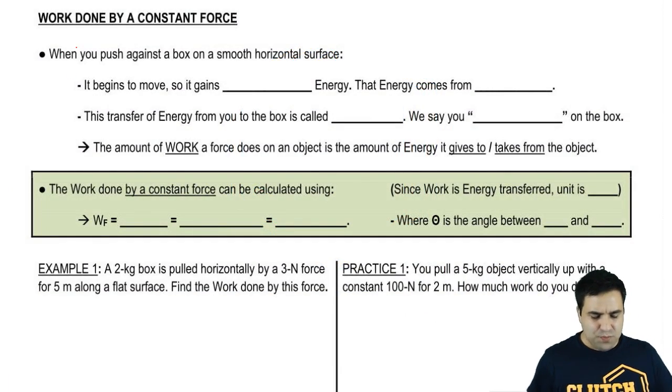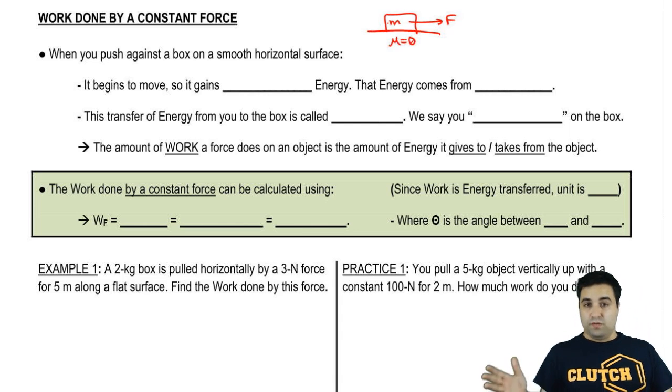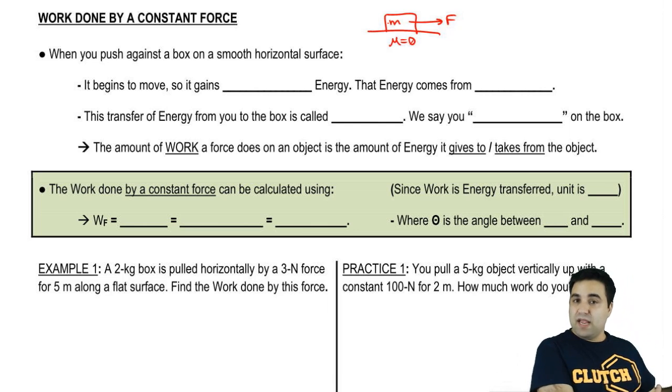So the idea is that when you push against a box on a smooth surface, let's draw this as a smooth surface. There's no friction, mu equals zero. If you push it this way, the box starts to move, right? There's no resistance. So if you push, it has to start moving. F equals ma, you get an acceleration, it starts accelerating, it moves.